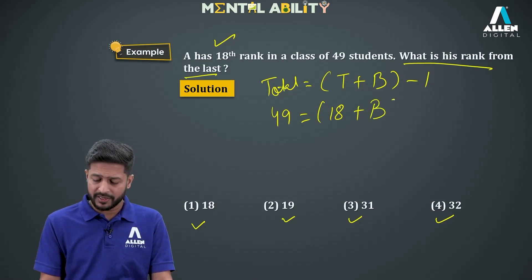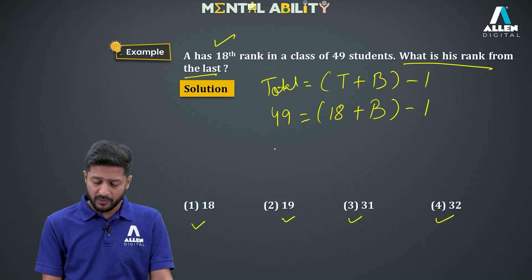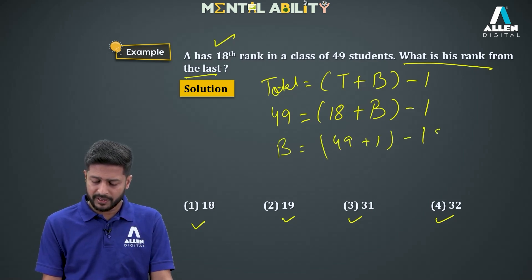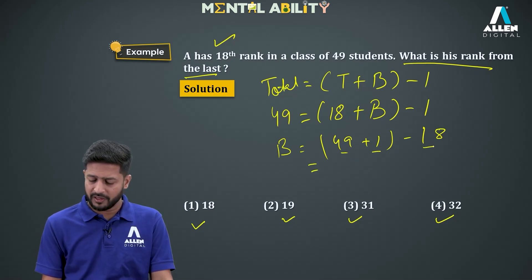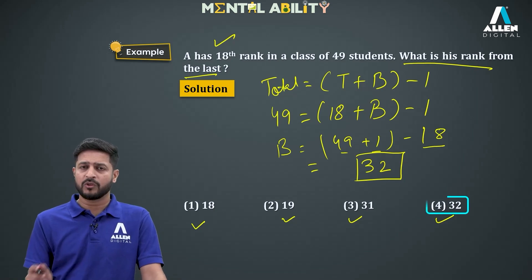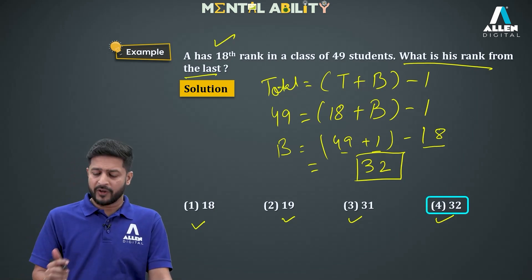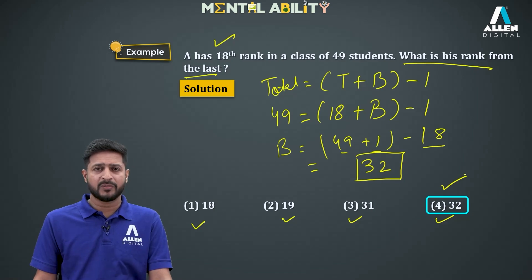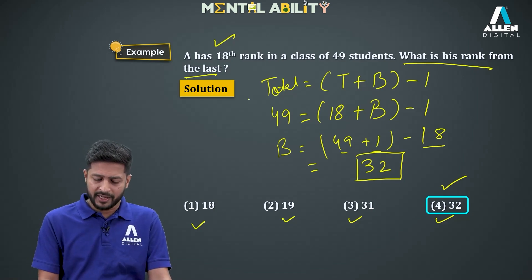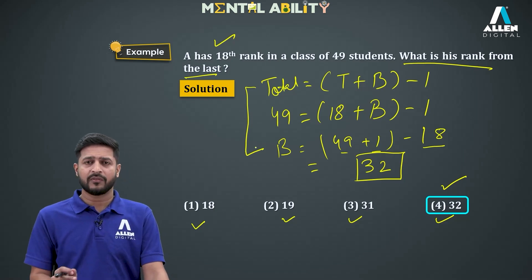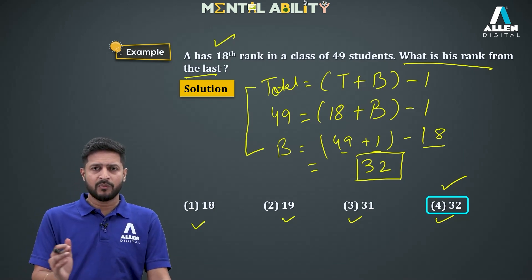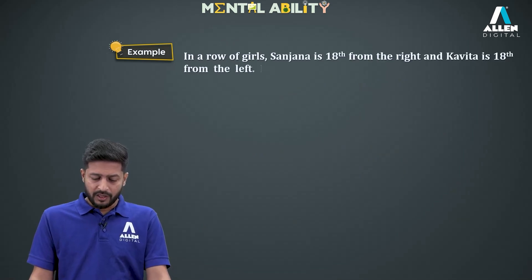Substituting: 49 = 18 + B − 1, so B = 49 + 1 − 18 = 32. The rank from the bottom is 32. This matches option 4, which is the correct answer. We have applied the same formula by replacing left/right with top/bottom.